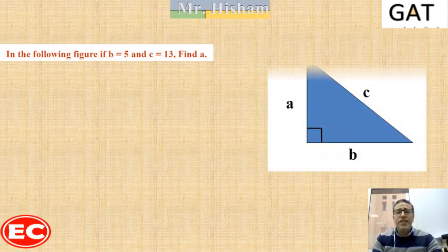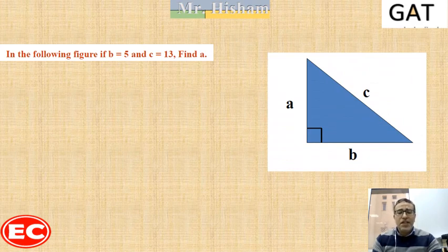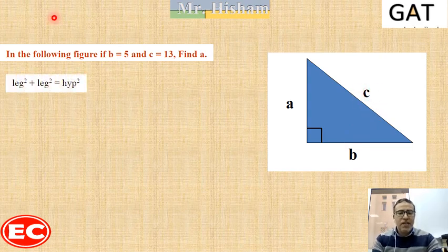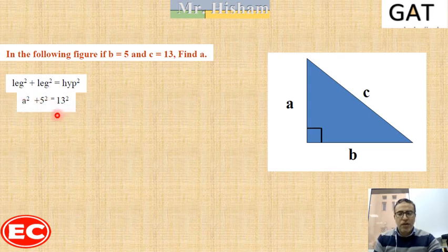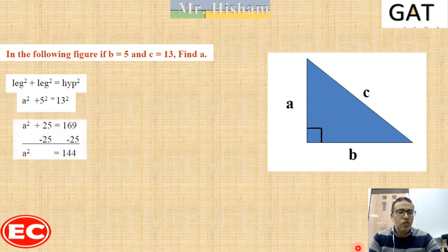Another example: in triangle ABC, one leg B is equal to 5 and the hypotenuse is equal to 13. I am looking for the length of side A. So A squared plus B squared equals C squared, which gives A squared plus 5 squared equals 13 squared. 13 squared is 169.